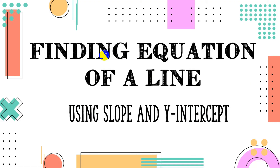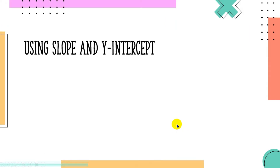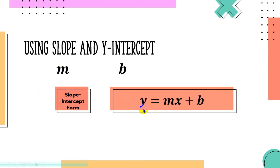Let's start with finding the equation of a line using slope and y-intercept. We expect that the given values are the slope and the y-intercept. Slope is represented by variable m and y-intercept is represented by variable b. The form of linear equation that has both m and b is the slope-intercept form: y equals mx plus b. What we're going to do is substitute the given slope and y-intercept into this equation.